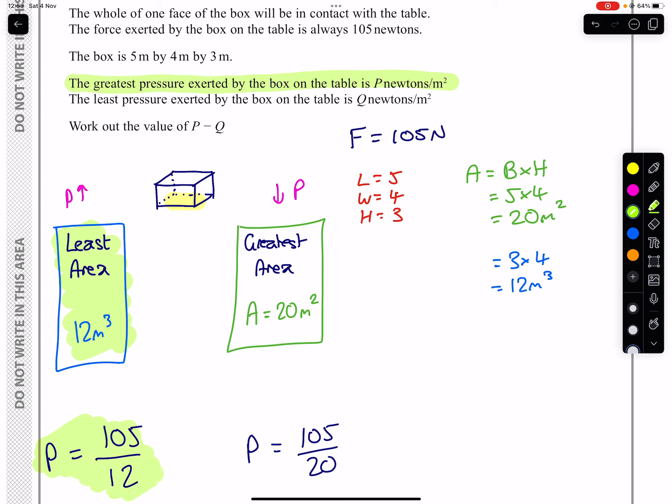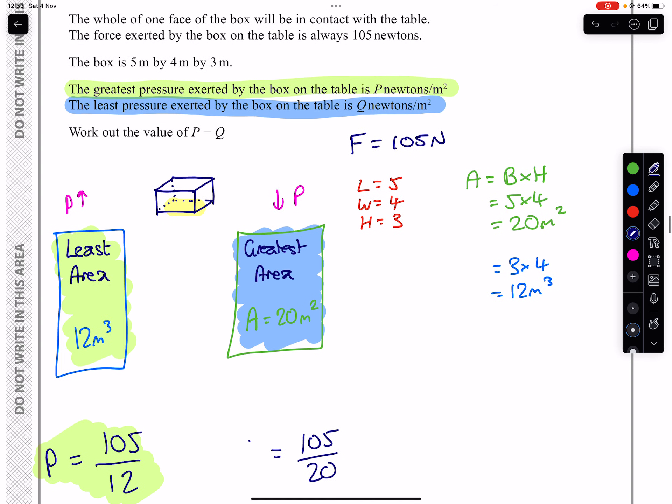The other one for the greatest area, we will get the least pressure, meaning that all of this will be here, which means that's not going to be a P, that's going to be a Q. So I'm just going to change that now to a Q.